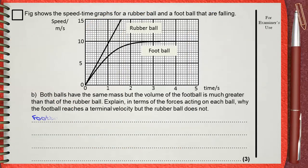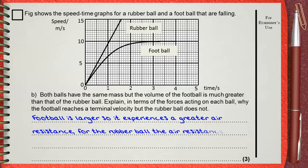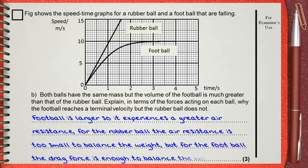So we can answer this: Football is larger, so it experiences a greater air resistance. For the rubber ball, the air resistance is too small to balance the weight. But for the football, the drag force is enough to balance the weight.